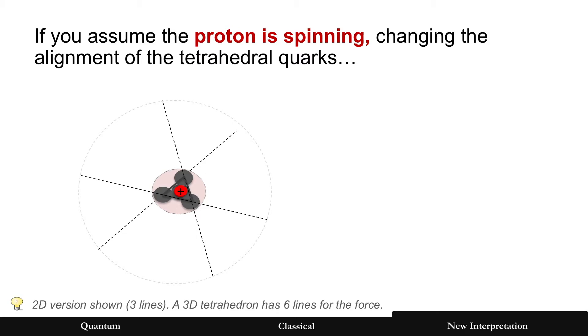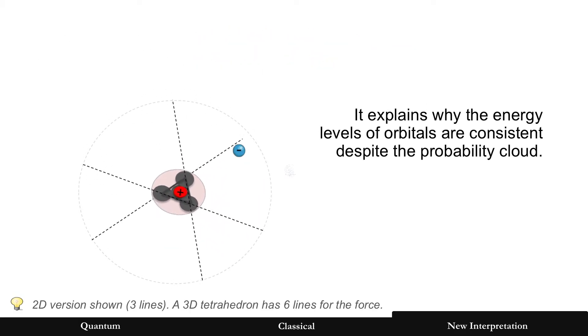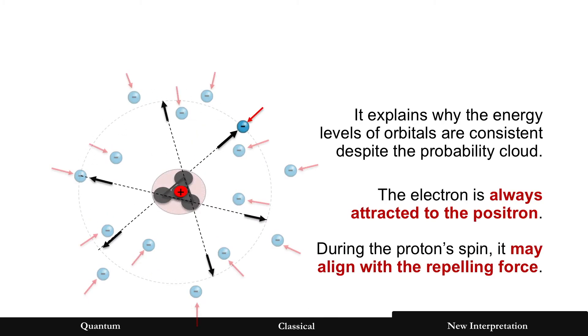Now, if you assume the proton is spinning, it changes the alignment of those tetrahedral quarks because that's the only point where the forces act. And so that electron is constantly being pushed and pulled, sometimes closer, sometimes further. But again, the orbital is the point where the sum of the forces just at those axes are zero.